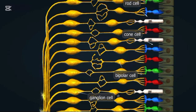Cone cells are specialized photoreceptors in the retina that detect light and color. Rod cells are photoreceptors in the retina that help us see in low light.